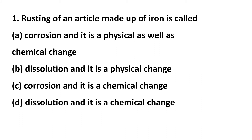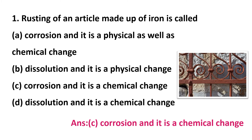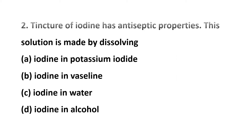Option A: corrosion and it is a physical change as well as chemical change. Option B: dissolution and it is a physical change. Option C: corrosion and it is a chemical change. Option D: dissolution and it is a chemical change. The rusting process is a chemical process and it is a corrosion process. The answer is option C: corrosion and it is a chemical change. Corrosion is when iron particles form a brown color substance around it when kept in moisture conditions in the presence of water and air.